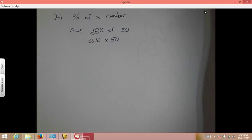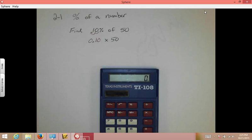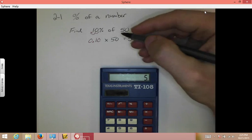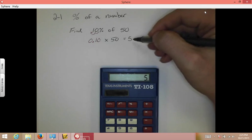So, doing this, 0.10 times 50, we end up with 5. So, that means 10% of 50 is 5.